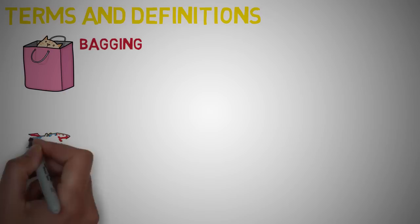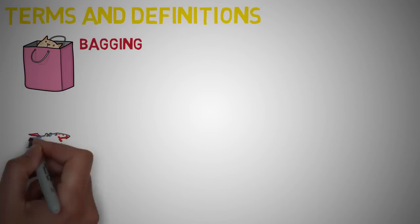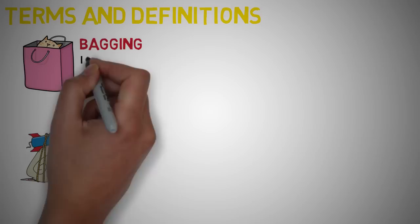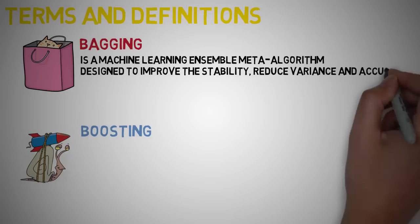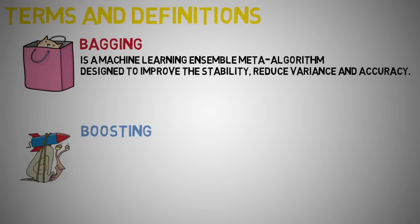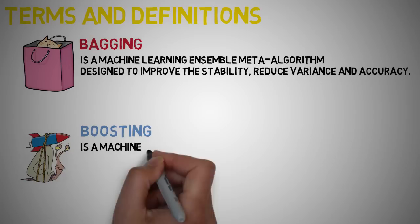Before we end the lecture, let's take a look at some terms and definitions that you might come across such as bagging and boosting. Bootstrap aggregating is also known as bagging, which is a machine learning Ensemble meta-algorithm designed to improve the stability and accuracy of machine learning algorithms used in statistical classification and regression. It also reduces variance and helps to avoid overfitting.